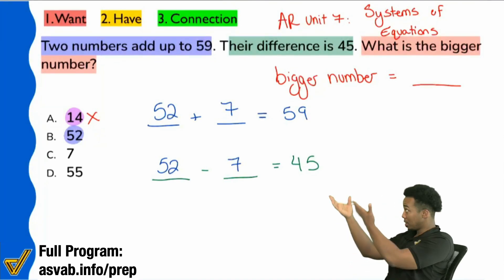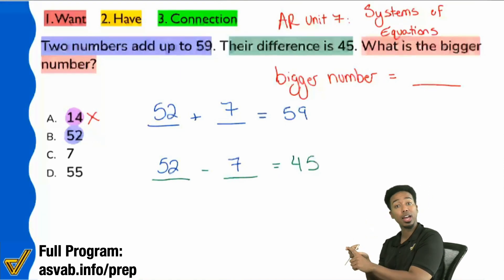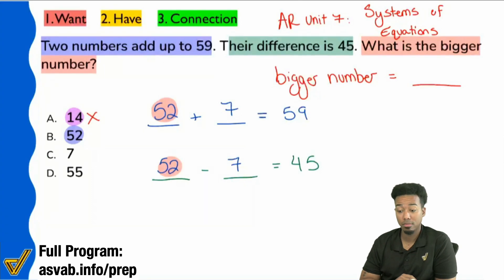So it looks like what we said about the problem. They add up to 59. They subtract to 45. These numbers work. Everybody, is that number 52? Is that the bigger number of the two? It is the bigger number of the two. So that will work.